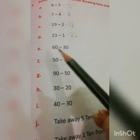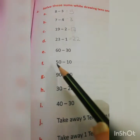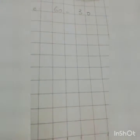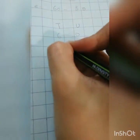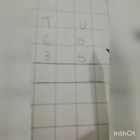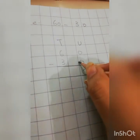Now you can see the rest of the sums: 60 minus 30, 50 minus 10, 90 minus 50. It means that we only have to subtract 10s — there are no units. Sum number E is 60 minus 30. First we will draw 10s and units. We will start from the unit: 0 minus 0, no units.